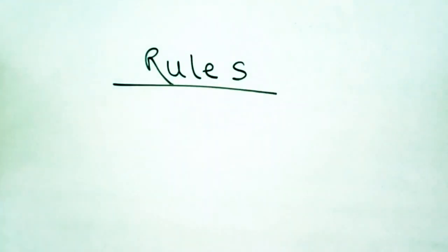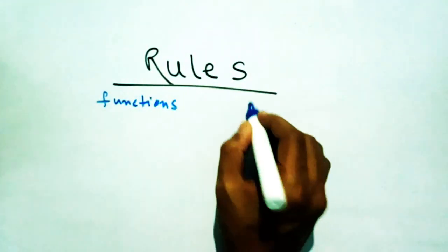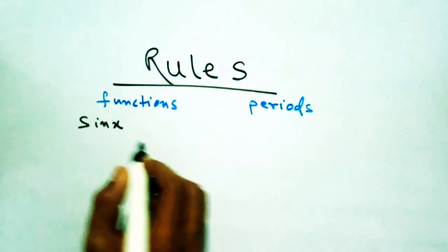To find the period of a function in examination, we have to learn some rules. So rule number 1: the period of sin x, cos x, cosec x, and sec x is equal to 2π.